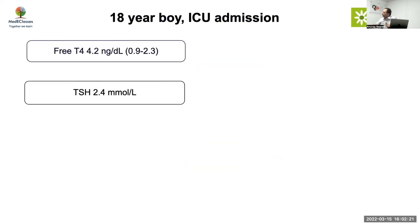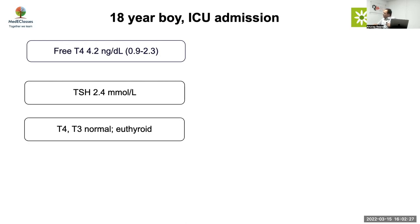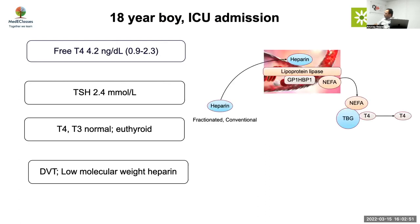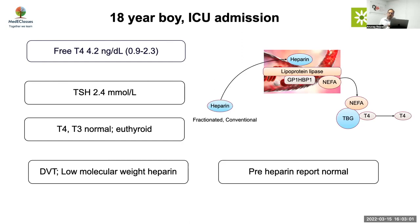Case: An 18-year-old boy in ICU had FT4 of 4.2 with normal TSH and T3, clinically euthyroid — this was due to being on low molecular weight heparin. High non-esterified fatty acids (e.g., in DKA) can also cause this scenario. Pre-heparin samples were normal. The principle: whenever you see an unusual report — high FT4 with low TSH, or low FT4 with high TSH — always consider lab error before rushing to a diagnosis.